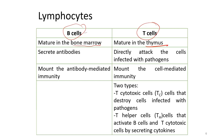If B cells encounter an antigen, they will bind to it using the B cell receptor found on their surface membrane. They will then be activated. For B cells to be activated, they need the help of a particular T cell called the T helper cell.